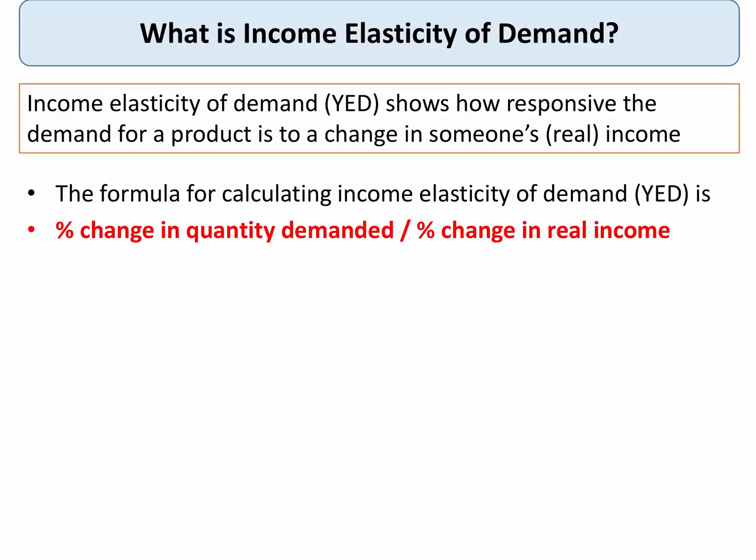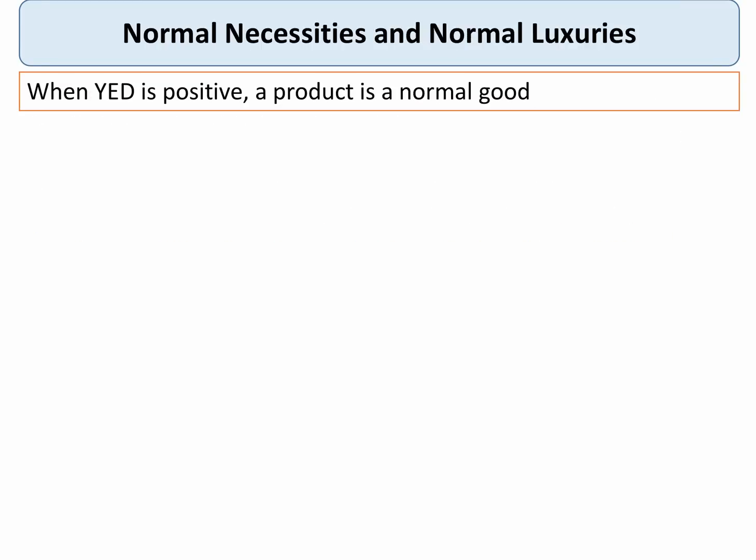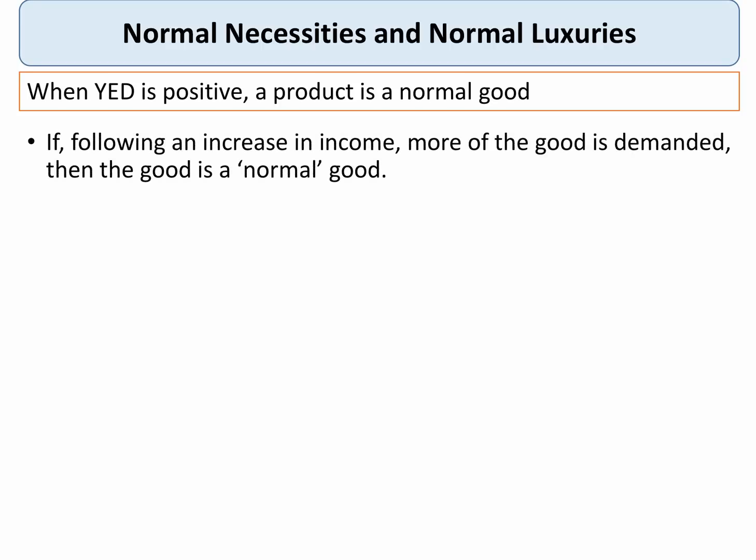When it comes to income elasticity of demand we look at different types of goods and services, and the crucial distinction to make is between a normal good and an inferior good. For a normal good, the income elasticity of demand is always positive — YED will be greater than zero — which means that if income goes up then the consumer will spend more on that particular product.